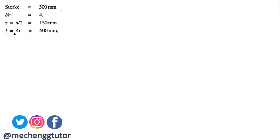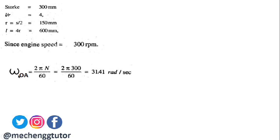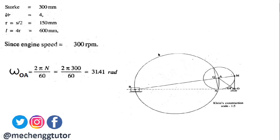The speed is given as 300 rpm, so the angular velocity of the crank is calculated as 2πN/60. Substituting N = 300, we get ω = 31.4 radians per second. With the crank length r = 150 mm and connecting rod length L = 600 mm, we now draw the mechanism and Klein's construction.